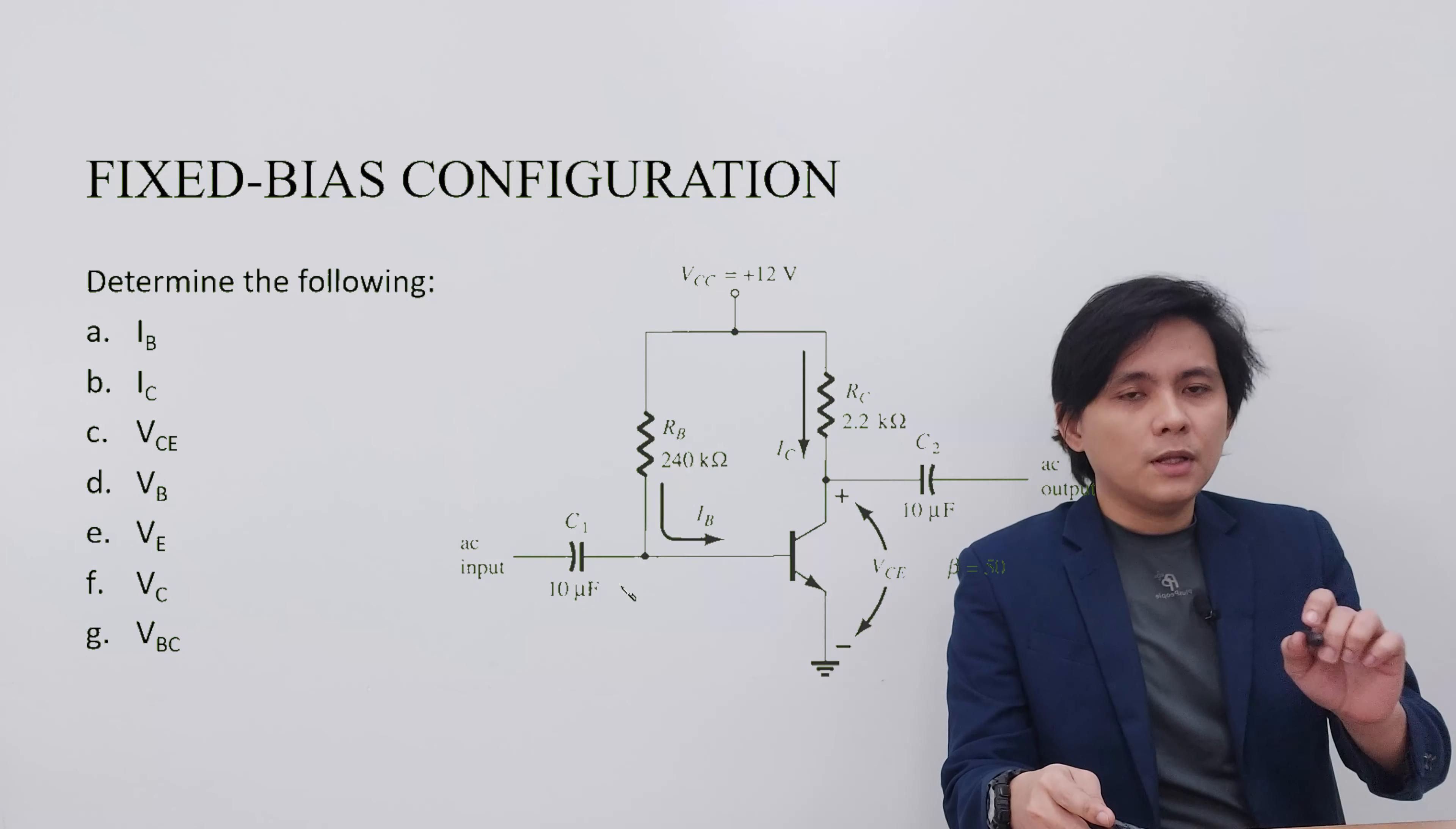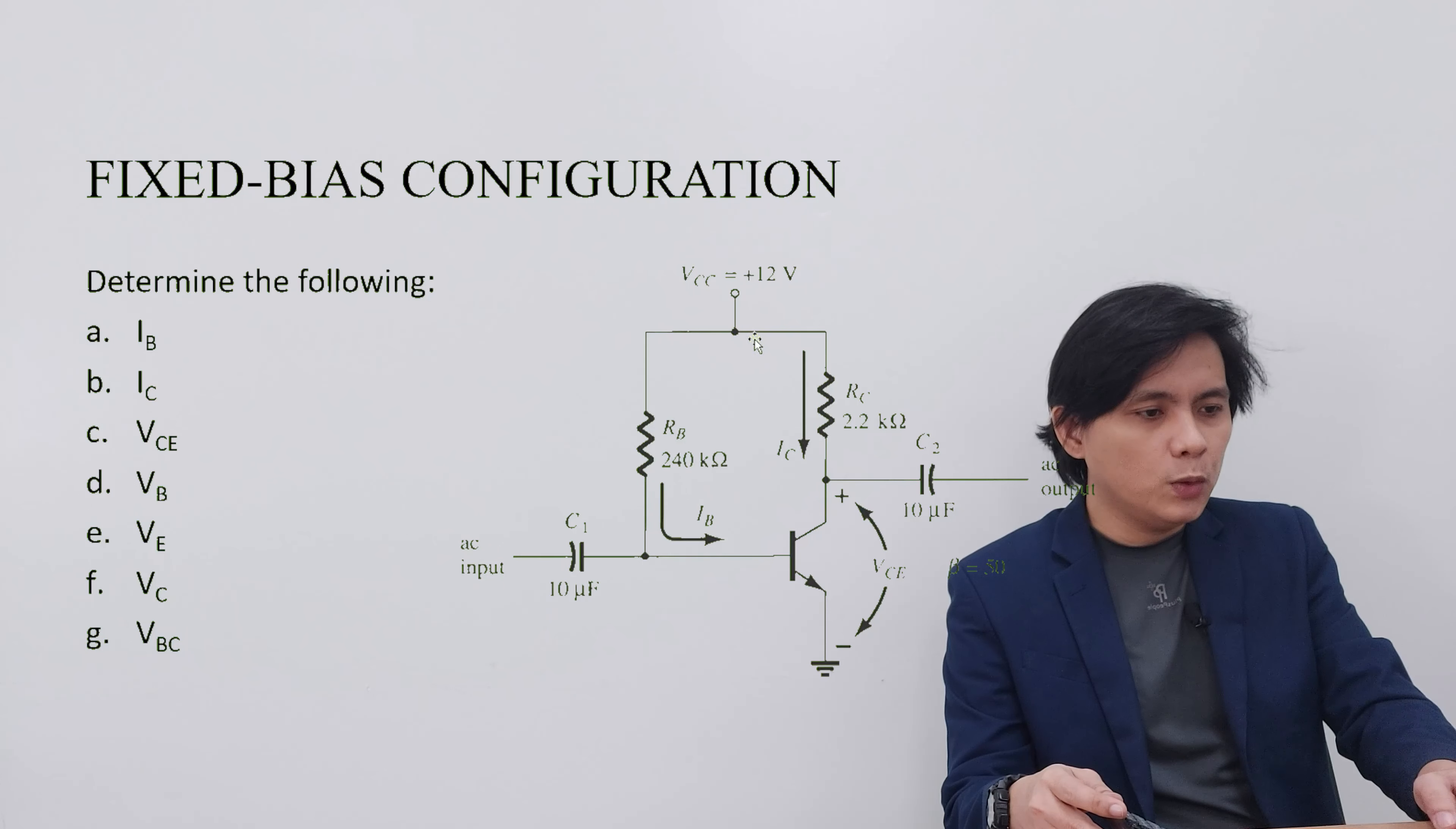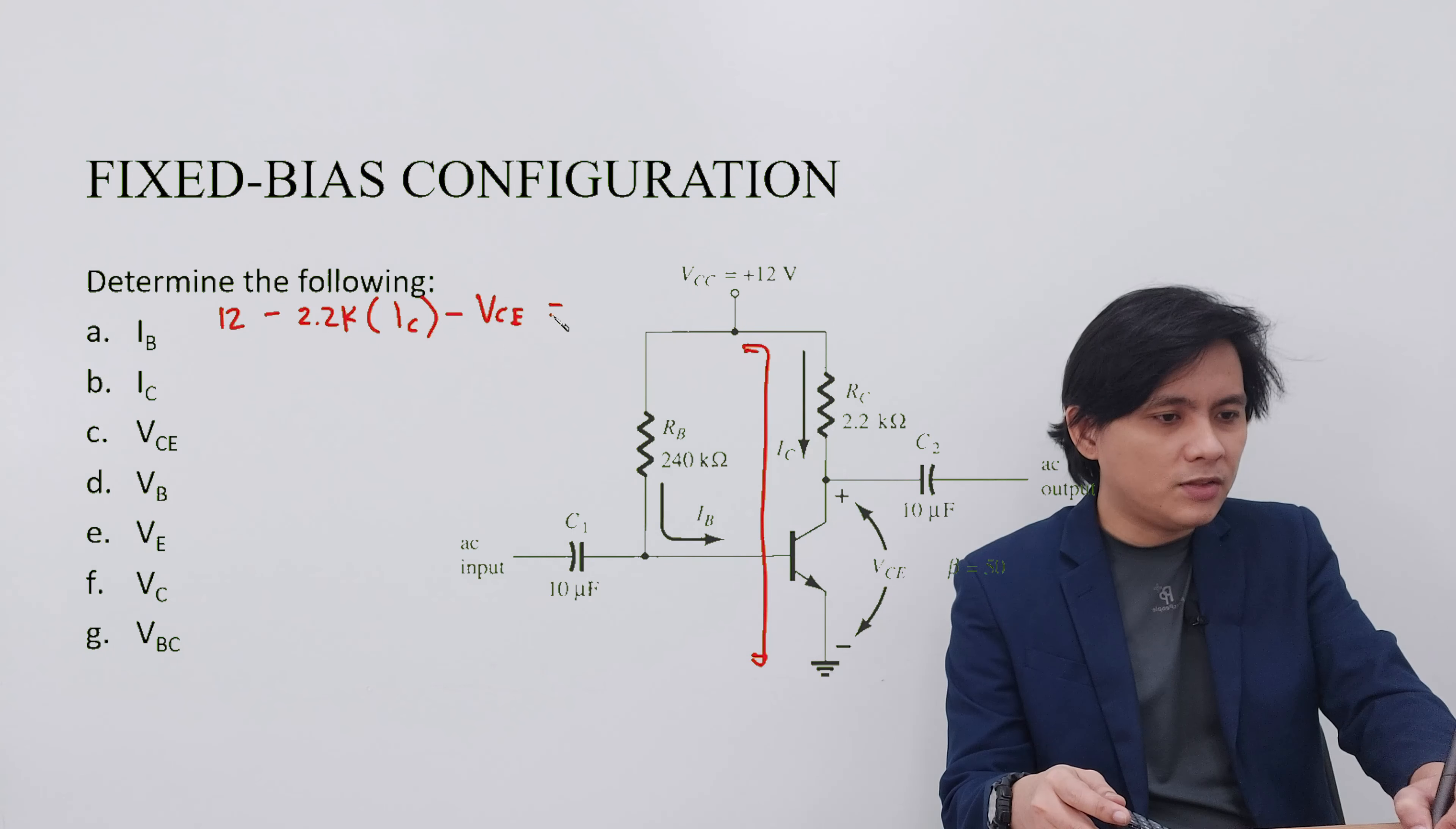The next unknown that we will be solving is the VCE. VCE is on the output side of the circuit. So let's do a loop from the VCC down to the ground. That is 12 volts minus IC times RC, that's 2.2 kilo ohms multiplied by IC, minus the CE junction VCE, and that is equivalent to 0.